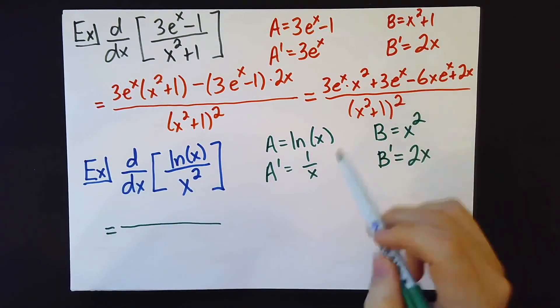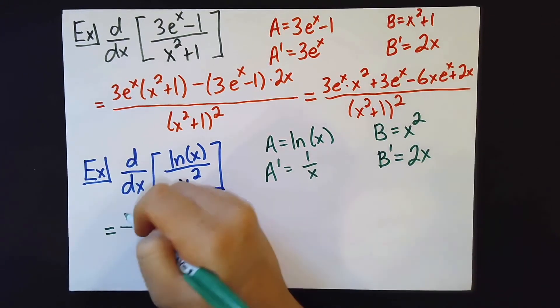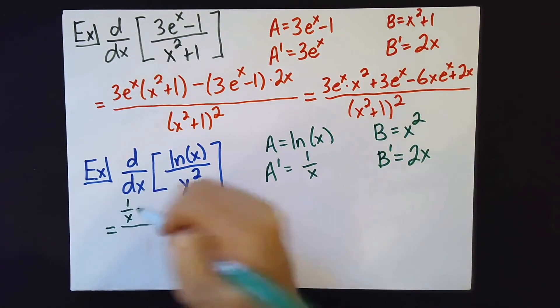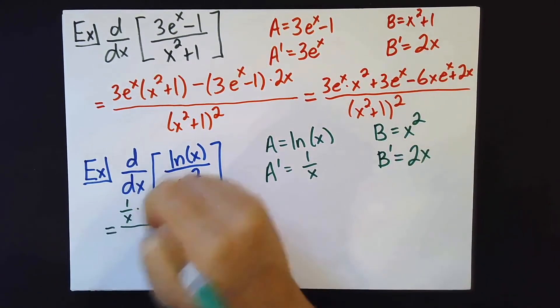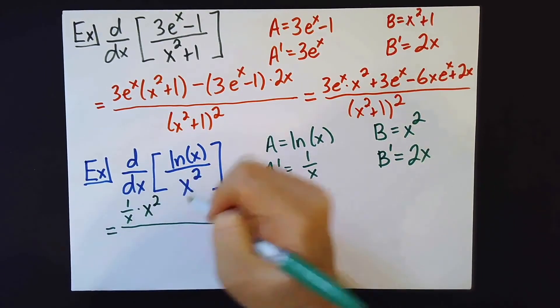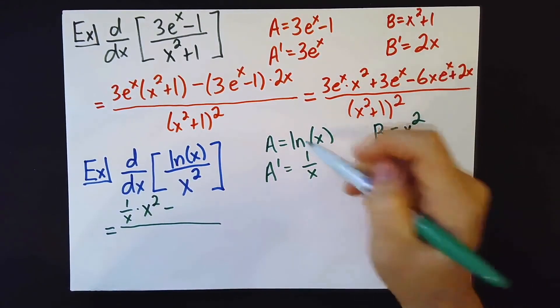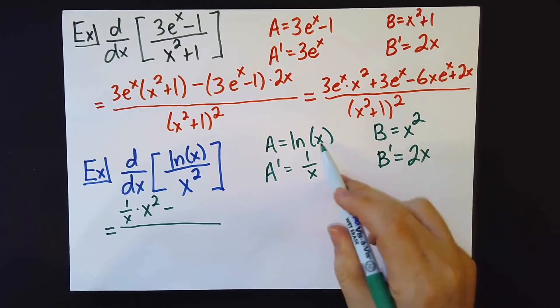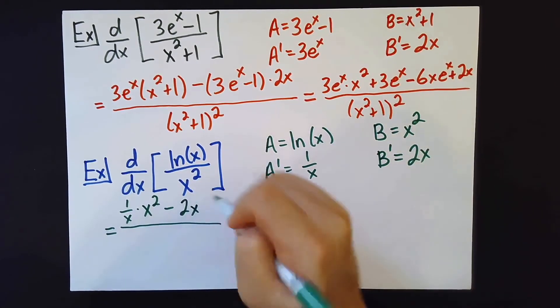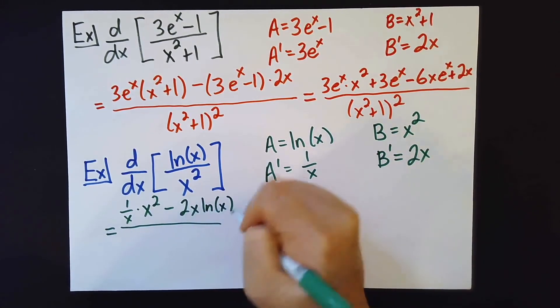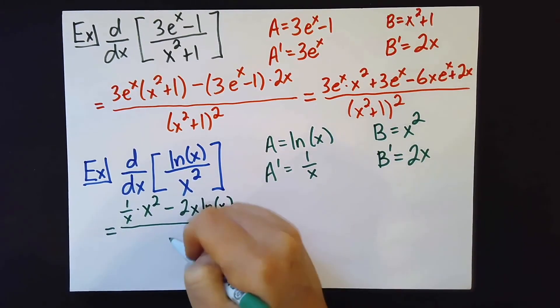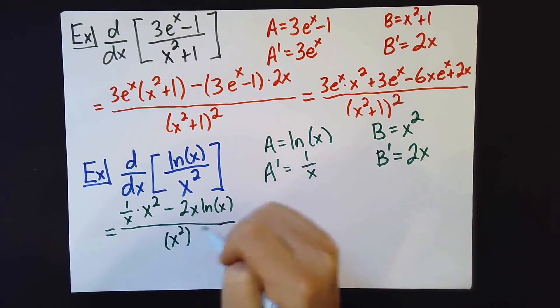Okay, so we've got our 1 over x here multiplied by x squared minus 2x log x divided by x squared squared.